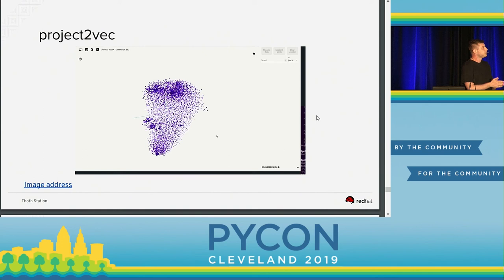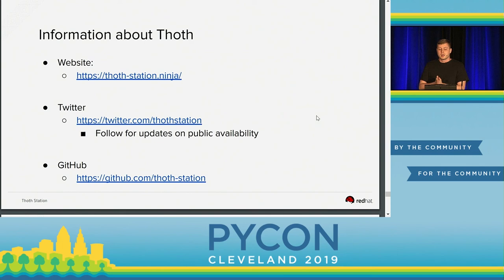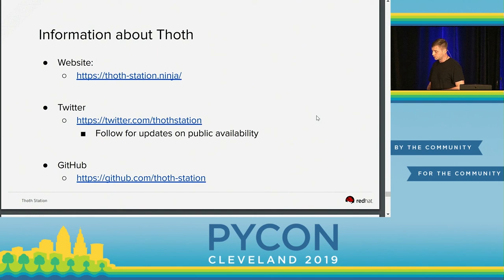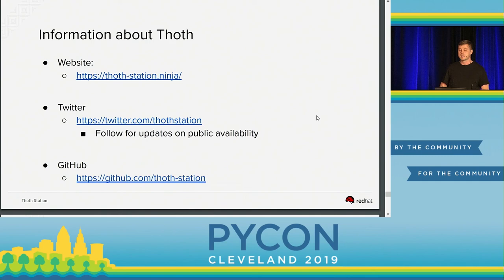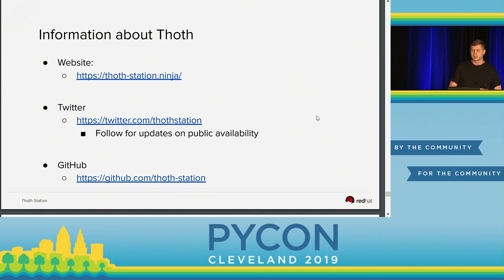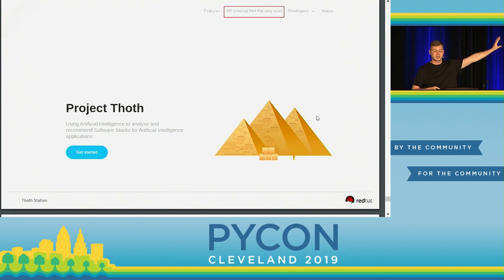This Vector Space Model is served by an API, and we would like to provide it to the community. Project Thoth can be found at thothstation.ninja. You can find us also on Twitter and follow us for updates. We have two environments right now and the third one is being provisioned. We plan to offer Thoth to the community so anyone can use it and benefit from it. We sit on GitHub — our organization is called Thoth Station. Everything is open source, and you can even provision your own Thoth instance and run it locally. Right now the API is accessible only Red Hat internally, but we would like to make it more stable and provide it to the community.